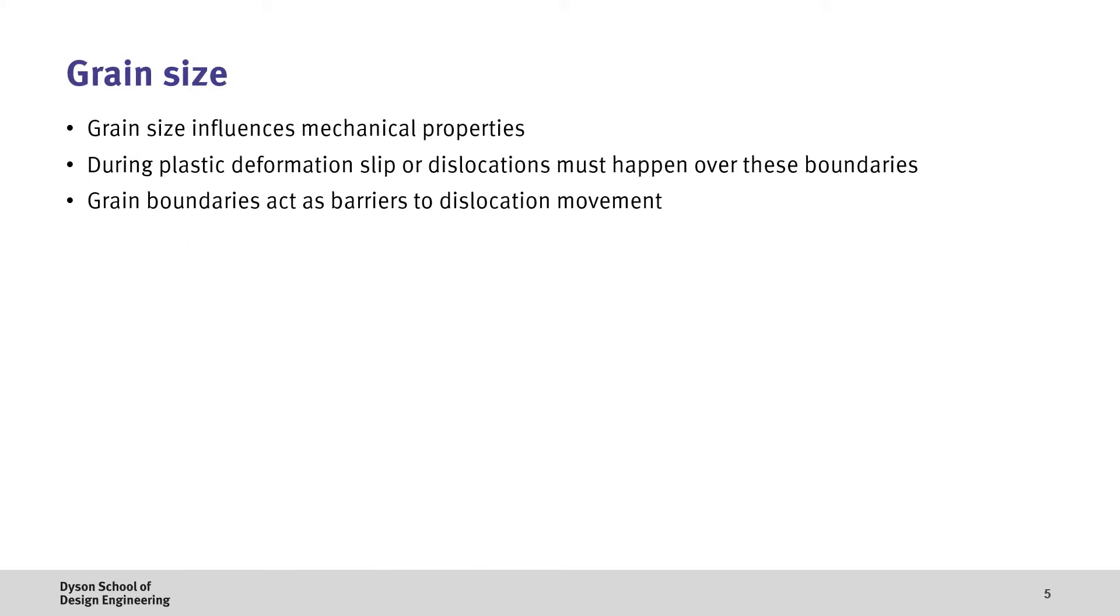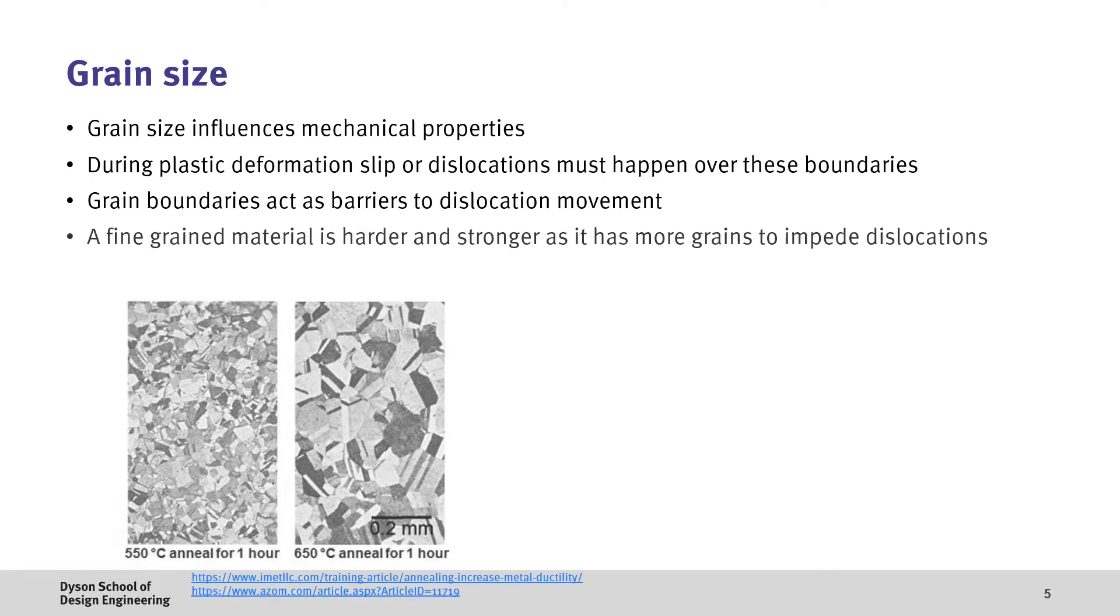Now beyond atomic level influences, the size of individual grains in a metal also has a strong influence on the mechanical properties. Again, this is related to the mobility of dislocations within the material as these dislocations have to happen over these grain boundaries during plastic deformation. Therefore grain boundaries act as a barrier to dislocation movement. A fine-grained material therefore tends to be harder and stronger as there is more resistance to dislocation movement.